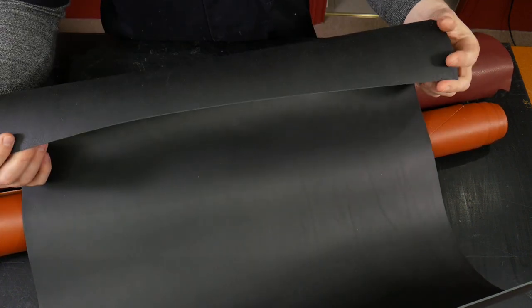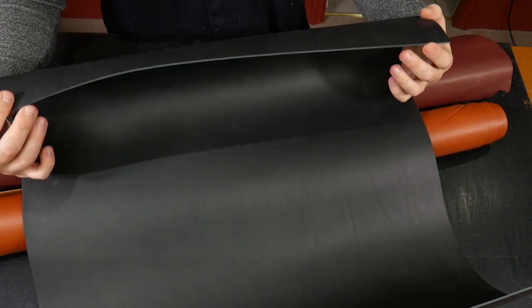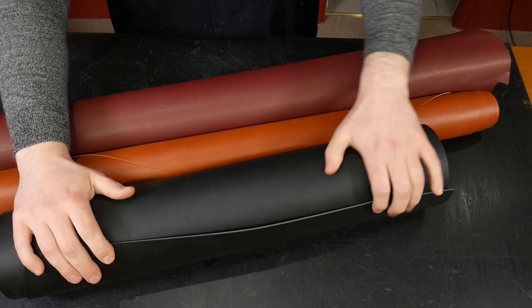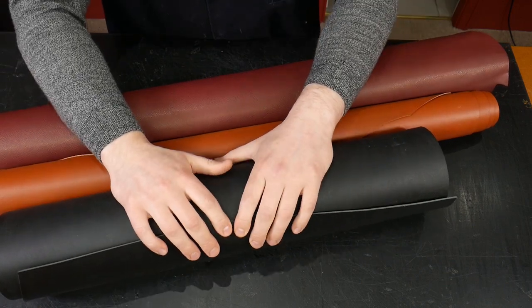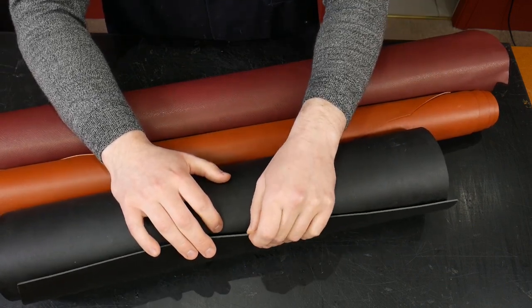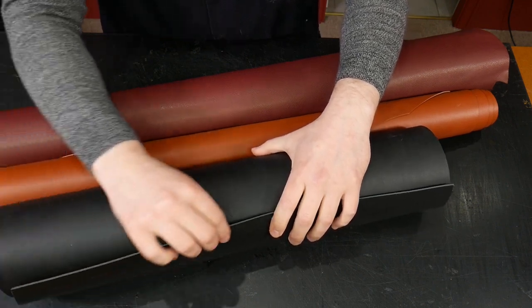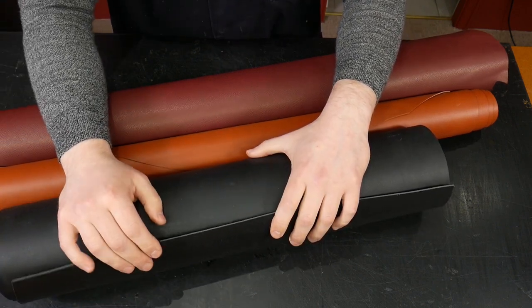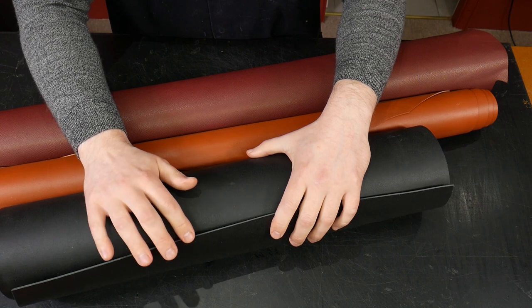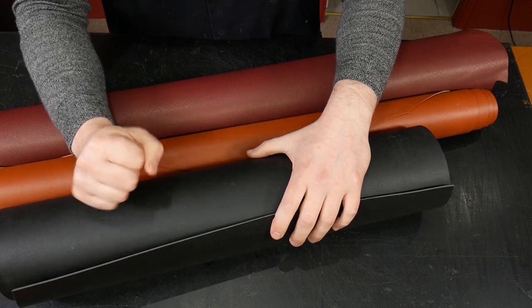This is a pure calf vegetable tanned leather, as stiff as vegetable tanned leather in cowhide but due to its thinner thickness it's not going to be as stiff. But thickness for thickness it's about the same, maybe even a little bit more in calf due to that really tight grain.